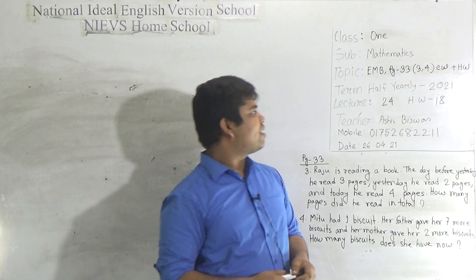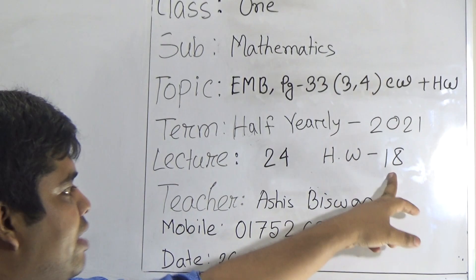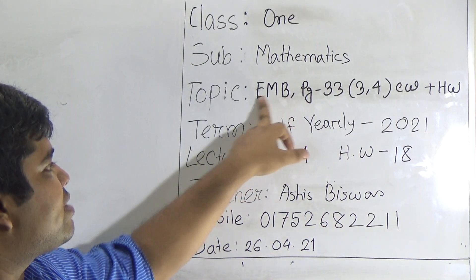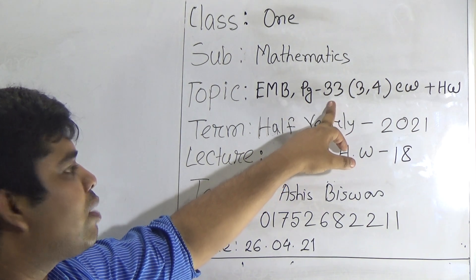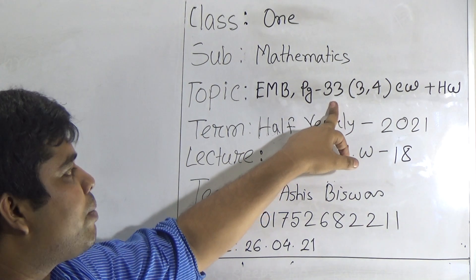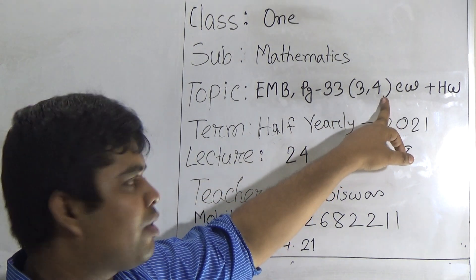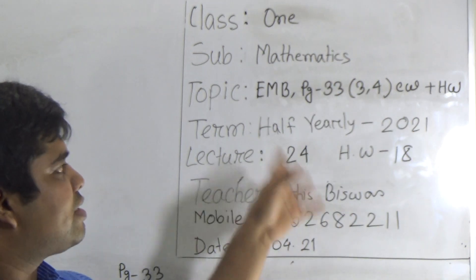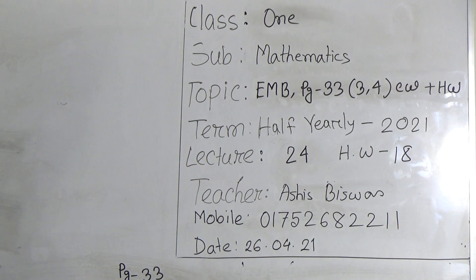Dear student, today is our lecture number 24 of half yearly and today's SW number will be 18. Today's topic is the EMB book — that means elementary mathematics book — from page number 33. We shall solve two word problems, which are question number 3 and 4, as your CW, and this CW will be your SW also. So my dear student, let us start our class.